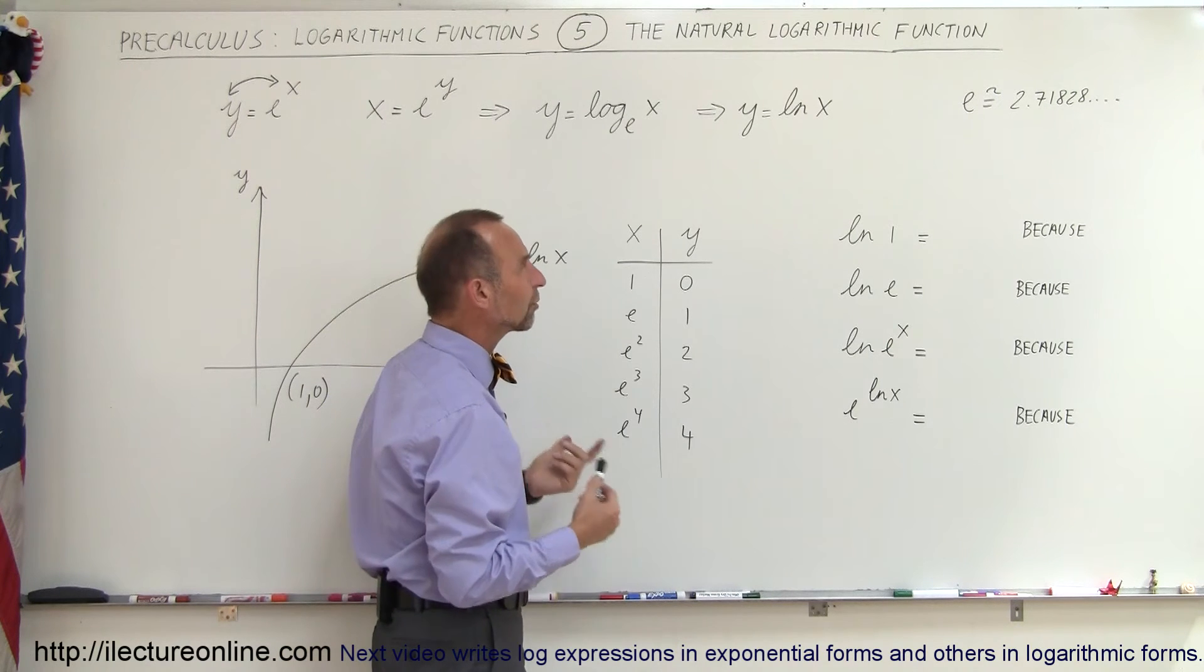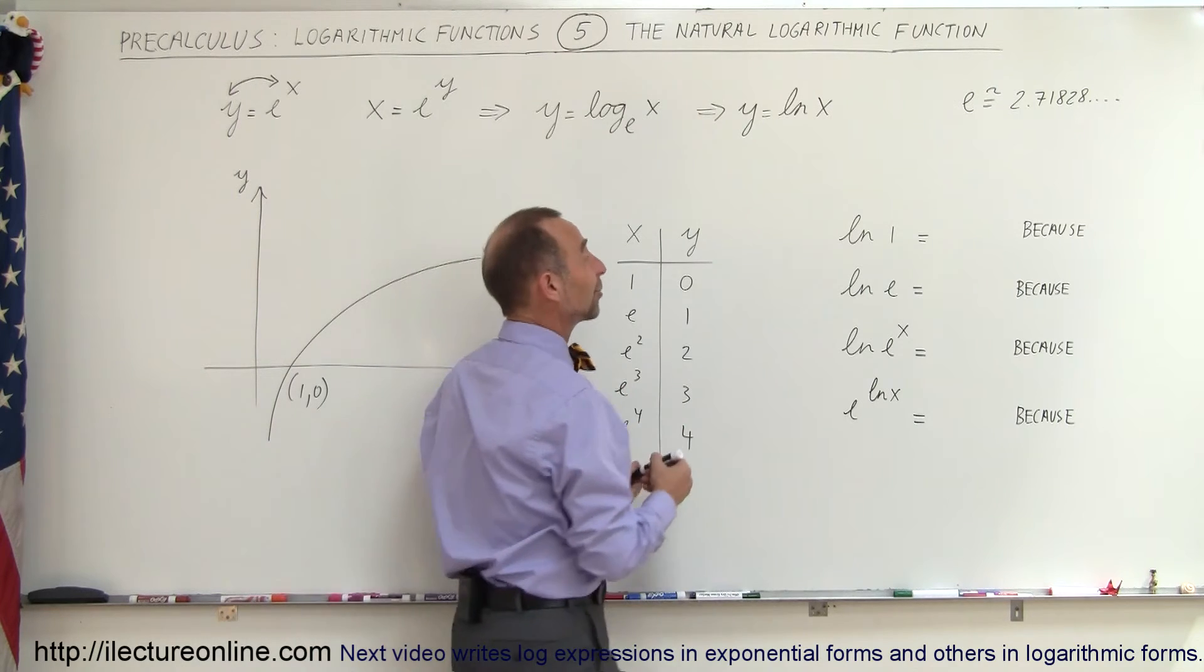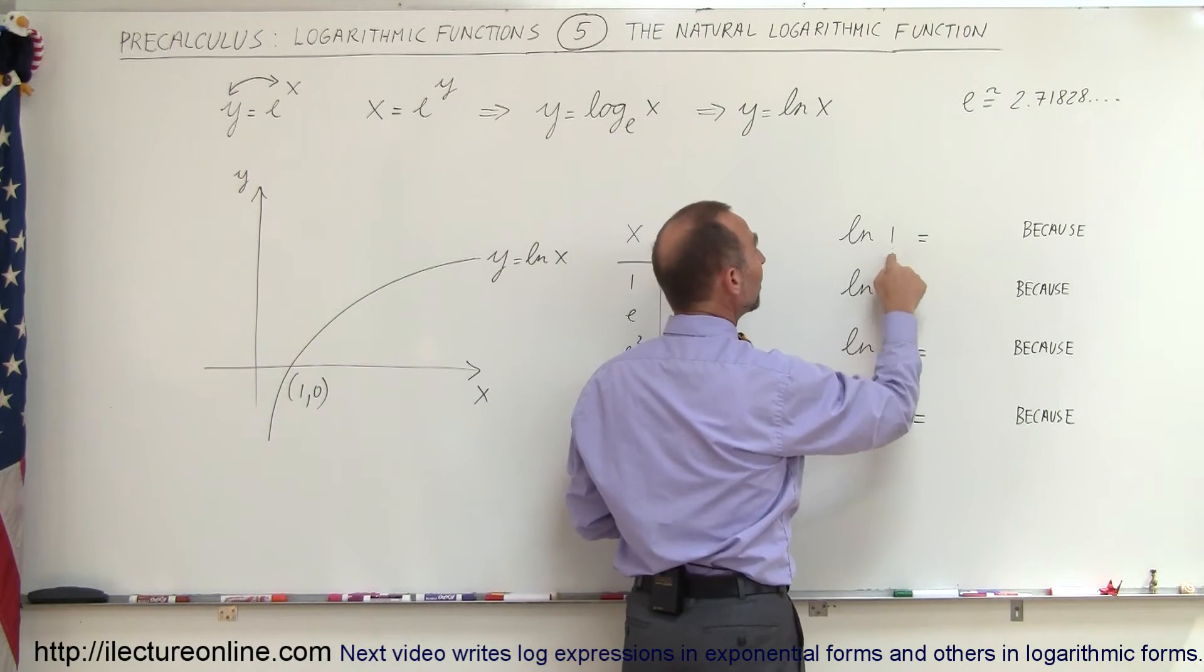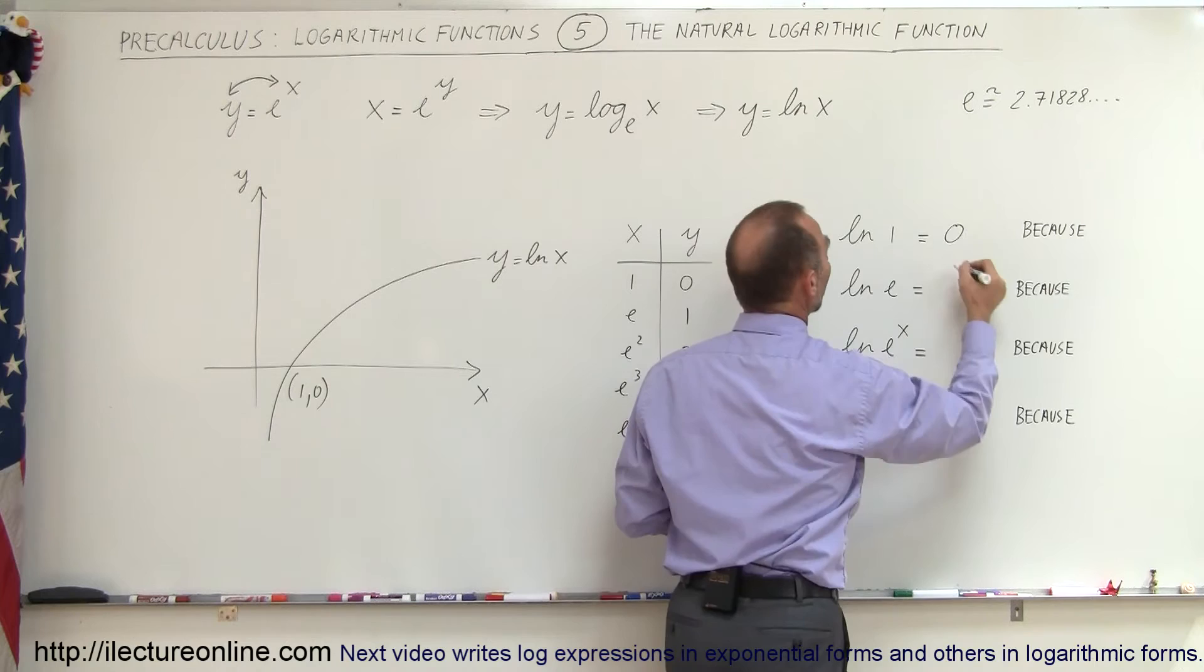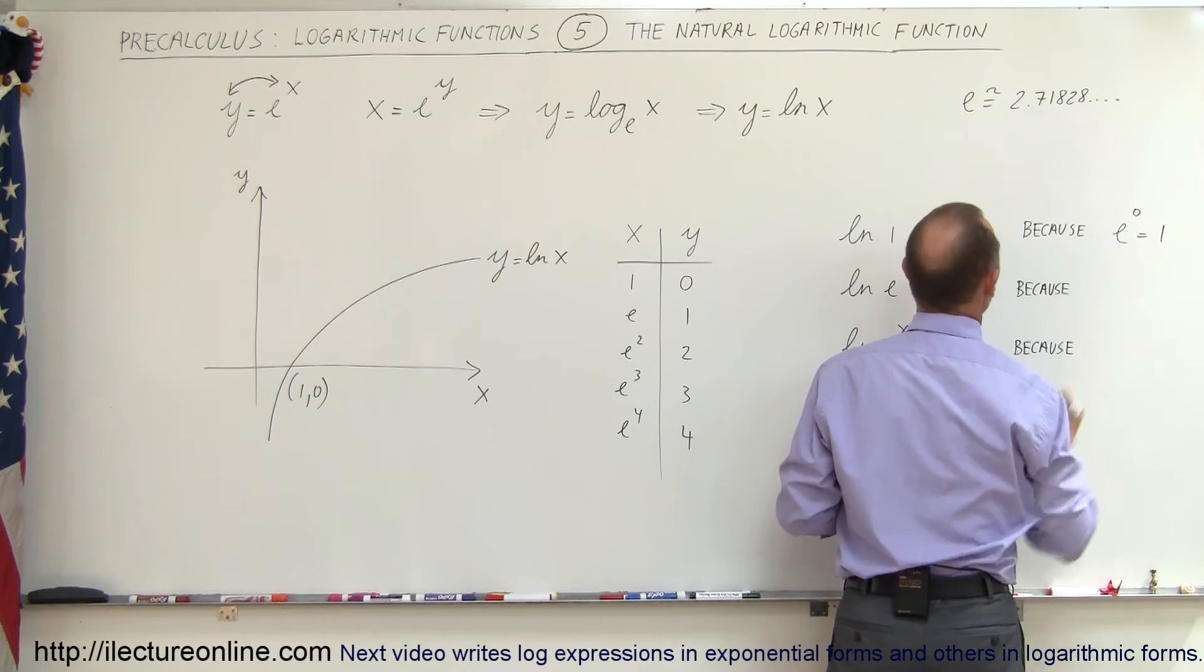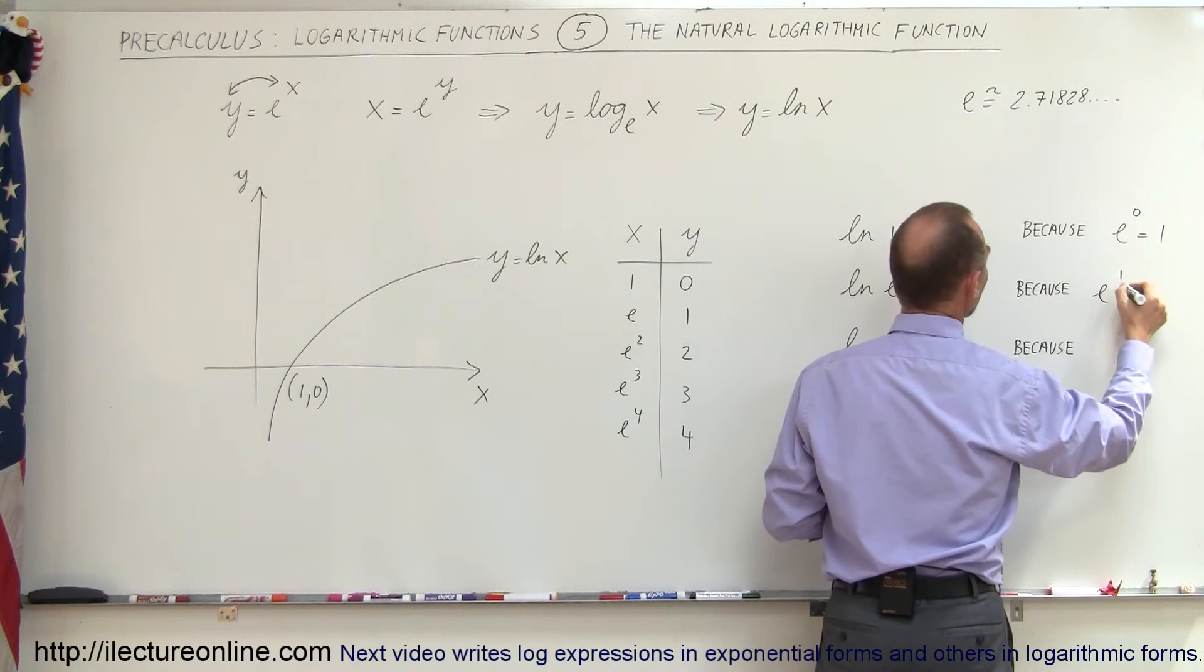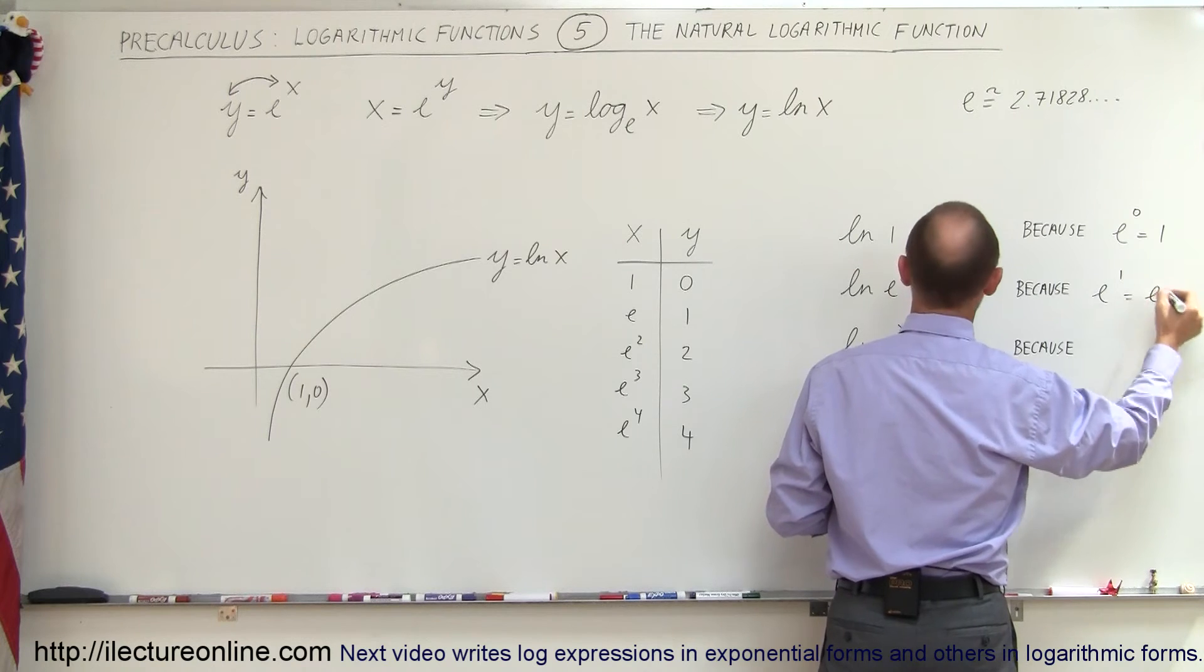So now let's go to the rules of logarithms and exponentials. The natural log of 1 is always equal to 0 because e to the 0 power is equal to 1. The natural log of e is equal to 1 because e to the 1 power is equal to e.